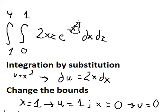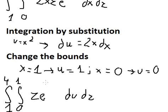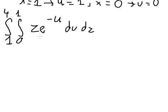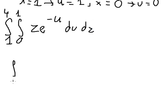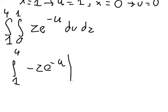For x squared we substitute u. The integral of e to the power of negative u gives us negative e to the power of negative u. We put the bounds from zero to two, and from zero to number one.